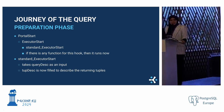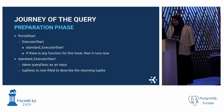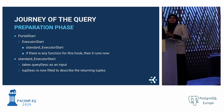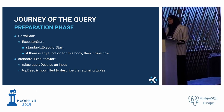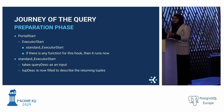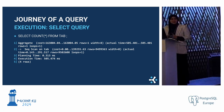Now we come to the execution phase, where things are actually running. This starts with PortalRun, which calls ExecutorRun. If there are any hooks on ExecutorRun, they are called here. Otherwise we proceed to ExecutePlan, which calls ExecProcNode. From this point on, ExecProcNode is the most important function — you'll see it called many times when debugging any query. It processes the current node: for a scan node it keeps calling the scan function per tuple, for a join node it keeps calling the join function until complete.